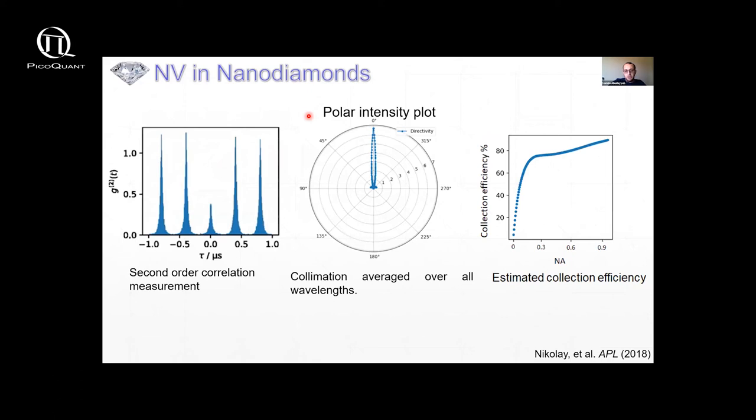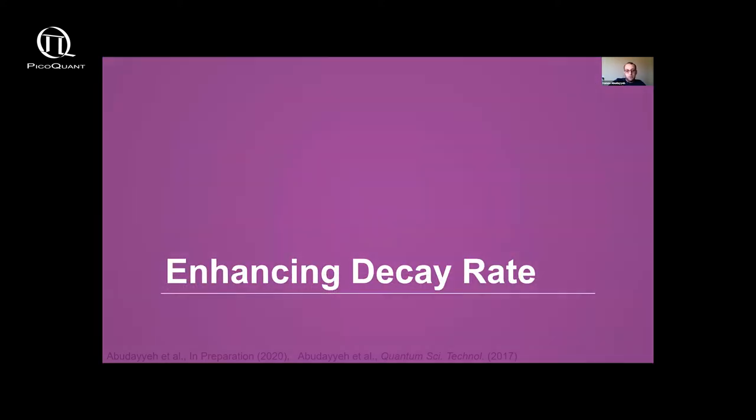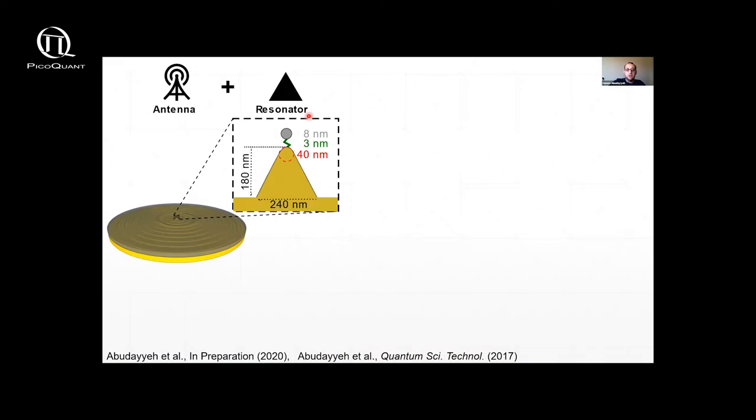So what I've shown you till now is that we can get very significant enhancement in directivity. But with no rate enhancement whatsoever. So how do we get the rate enhancement? We have to bring back this nanocone into the picture. So now we bring back this nanocone.